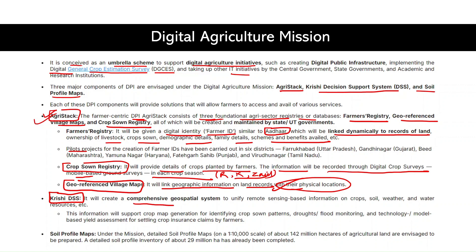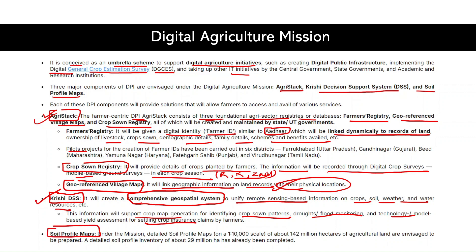The Crisis Decision Support System (CDSS) is a comprehensive geospatial system unifying remote sensing-based information on crops, soil, weather, and water resources. It supports crop map generation, drought and flood monitoring, technology-based yield assessment, and helps farmers settle crop insurance claims. The third pillar, soil profile maps, will create detailed soil profiles over 142 million hectares of agricultural land over the duration of the Digital Agriculture Mission scheme.